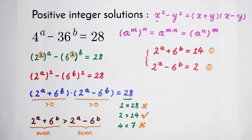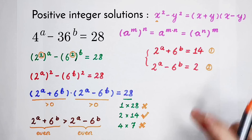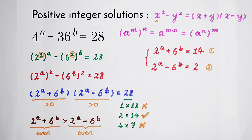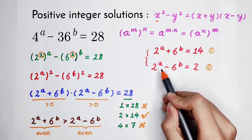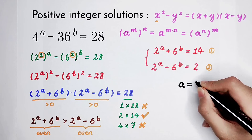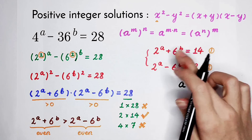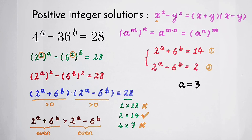To find 2 to the power of a and 6 to the power of b, add the two equations together: 2 times 2 to the power of a equals 16, so 2 to the power of a equals 8, meaning a equals 3. Since 2 to the power of a is 8, then 14 minus 8 is 6, so 6 to the power of b equals 6, meaning b equals 1.